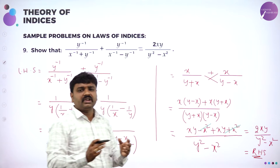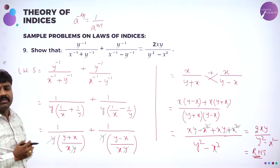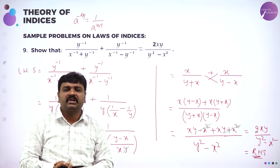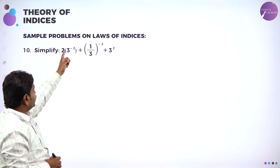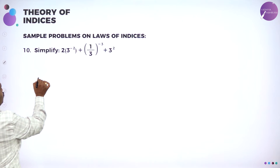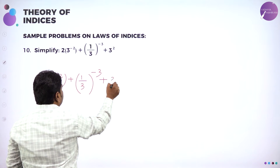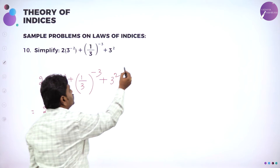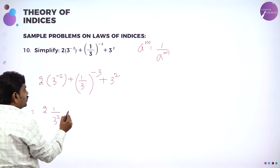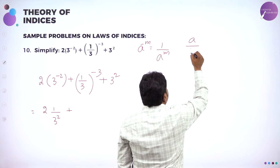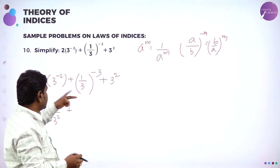Here LCM is the product of these two, cross-multiplied. The law of indices used is a^(-m) = 1/a^m, and the identity used is (a+b)(a-b) = a²-b², so y+x into y-x can be written as y² minus x².